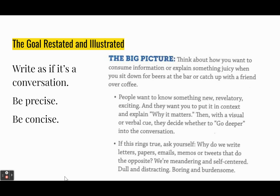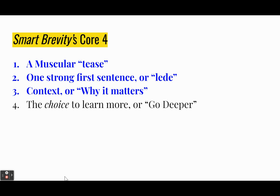We don't have an opportunity in a comp class or a college class for those visual or verbal cues, and almost every college class is going to ask you to go deeper — so that's not necessarily an option. If you look at the second bullet point, we have a huge burden of not being meandering, not being self-centered, not being burdensome. Smart Brevity's core four muscular T's — we'll talk about that. One strong first sentence, the context or why it matters — we'll talk about those. The choice to go deeper is not a choice; it's an expectation. You will go deeper.